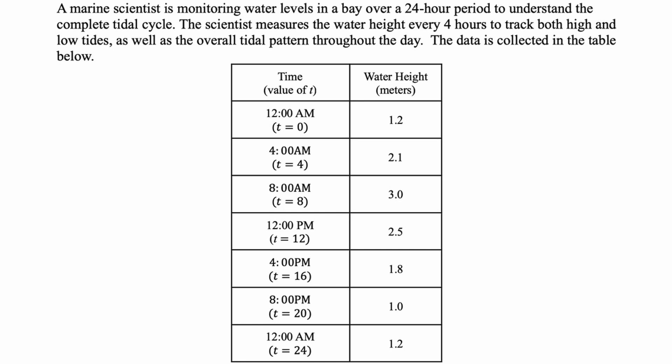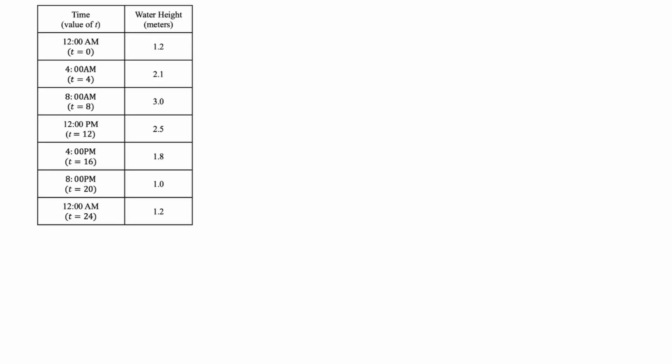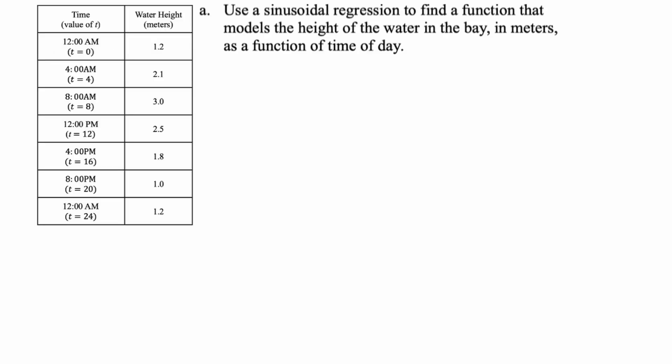Then you can see we have this table, it's got times with a value of t. So 12 a.m. is t equals zero, and then like, I don't know, 4 p.m. is t equals 16, etc. Then we have our water heights, and those are in meters. So the first thing that we're going to do is we're going to answer part A, which is to use a sinusoidal regression to find a function that models the height of the water in the bay in meters as a function of time of day measured using those t values.